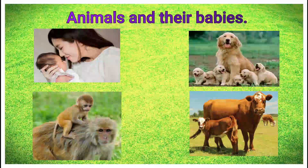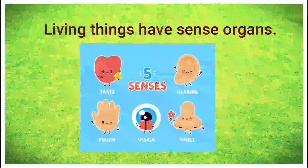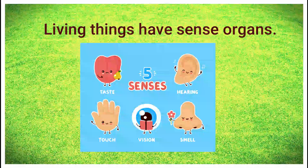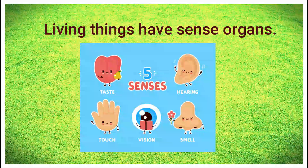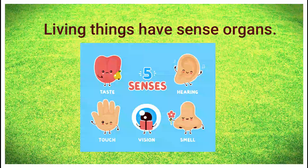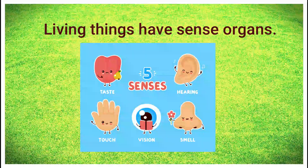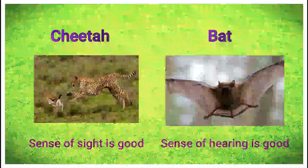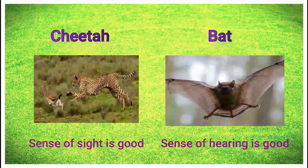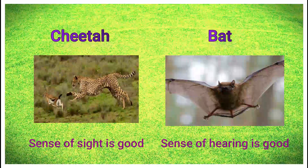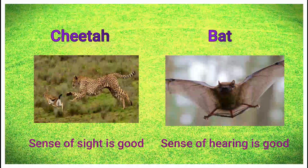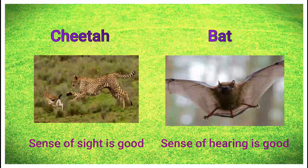Living things have sense organs. Sense organs help us experience hearing, sight, smell, taste, and touch. Animals rely on some senses more than others. For example, hunting animals like tigers and cheetahs need very good eyesight to find their prey. Bats have very poor eyesight, but their sense of hearing is excellent and they can find their way even in the dark.